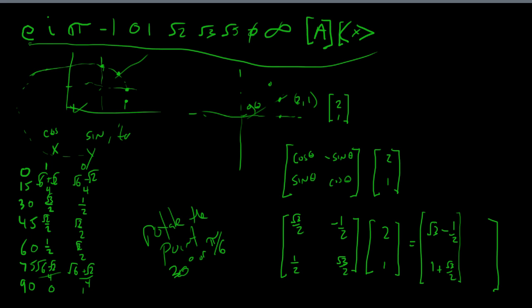We now have coordinates for where this point will be. At this point one might struggle to know what these values are — but you'll soon know that the square root of 3 is approximately 0.866. So we calculate 2 times 0.866, which is 1.732, approximately 1.7. So this coordinate is 1.7 minus one half, and the other is 1 plus 0.866.